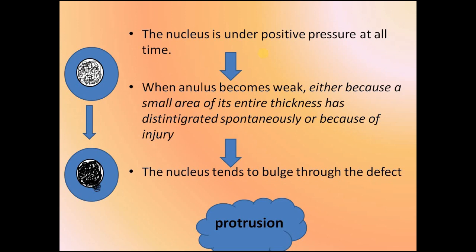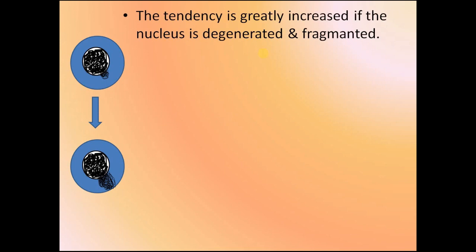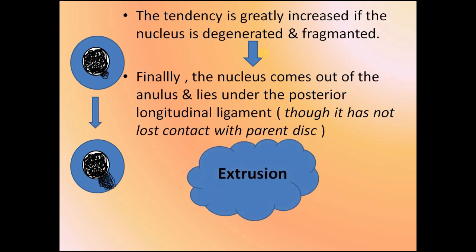The tendency for bulging is greatly increased if the nucleus is degenerated and fragmented. Finally, the nucleus comes out of the annulus and lies under the posterior longitudinal ligament, though it still has contact with its parent disc. This is called disc extrusion.